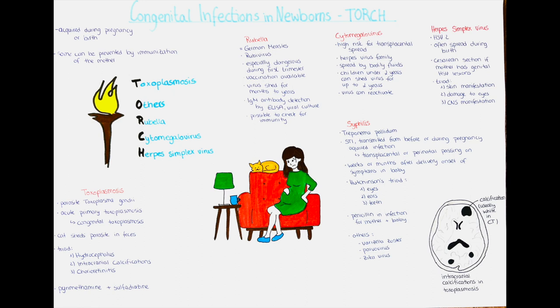The TORCH acronym does not cover all congenital infections, and more infections might be discovered. Some of these infections can be prevented through proper immunization from the mother — rubella is an example of this. It can be prevented by the mother having the vaccine before becoming pregnant. Rubella is normally not very dangerous for older children or adults, usually self-limited, but when a developing fetus is infected, the infant can develop congenital rubella syndrome, which can be devastating and lead to heart defects, cataracts, deafness, or even cause an abortion.